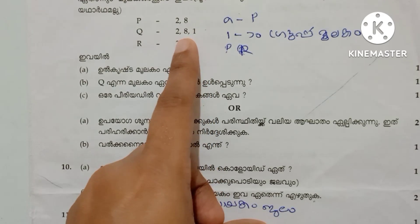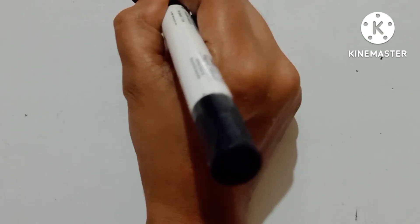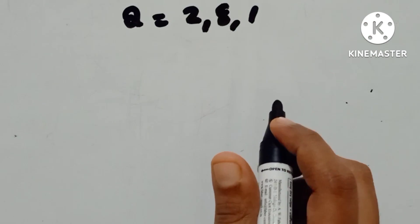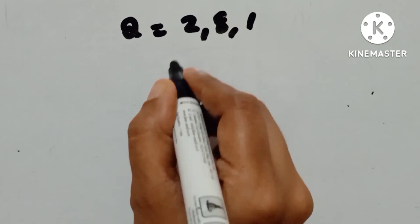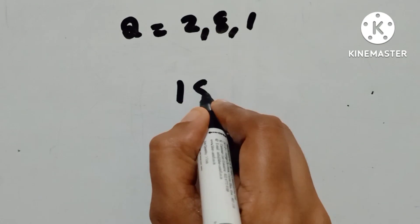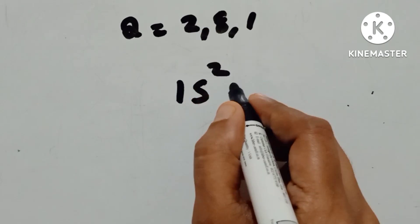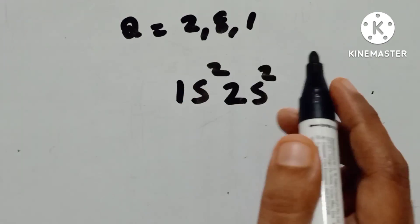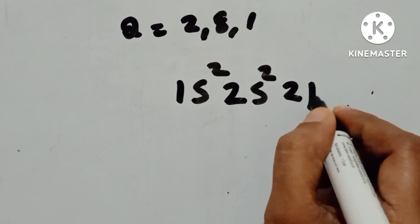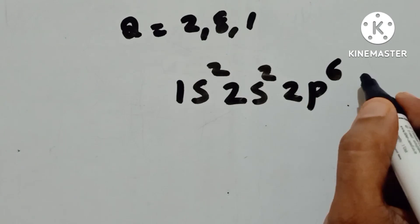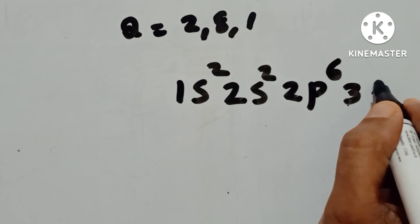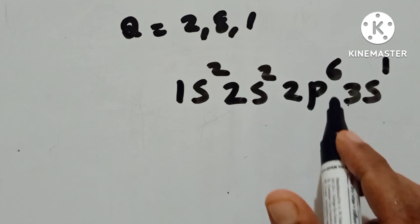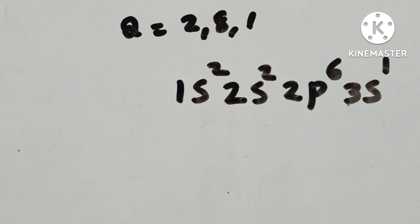What is the electron in the white corner? 2 and 1. The first electron is 1s2. We put the 1s2, 2s2, 2p6, 3s1.